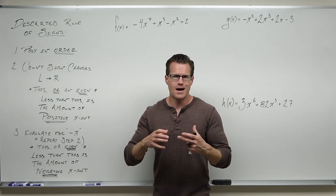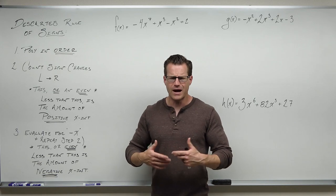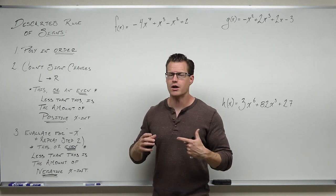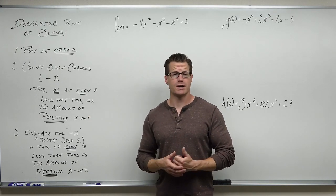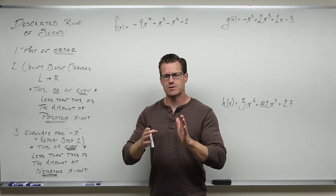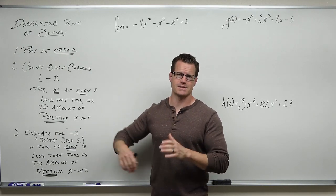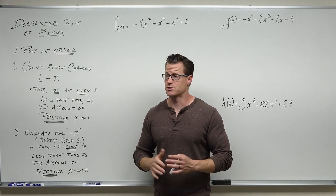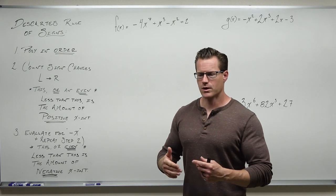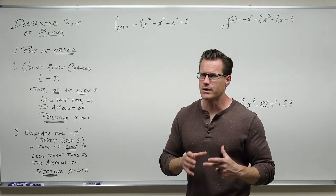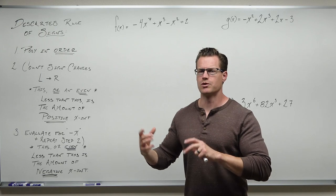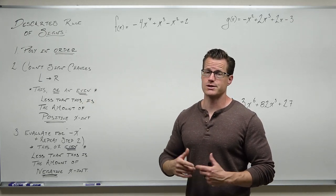That's very important because we can eliminate checking values that would not be x-intercepts anyway. Then we change the signs of our odd exponents — because you're going to evaluate for negative x. All it does is change the sign of your odd exponent terms, and then do the same thing. Only this time it's going to tell you the possible number of negative x-intercepts. That's what Descartes' rule of signs basically does. So we put your polynomial in order every time — that's very important before you start any of this stuff.